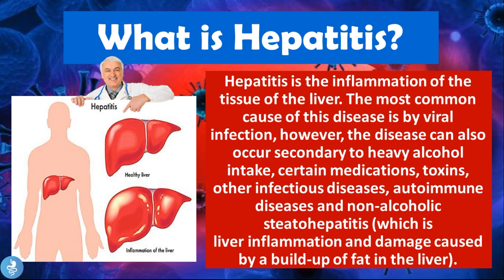So as you can see, the causes of hepatitis are quite broad. Hepatitis actually means the inflammation of the liver or the tissue that makes up the liver. Some of the causes include alcohol, certain viruses, certain medications, and some toxins. We can also have an autoimmune form, in which the body makes autoantibodies that attack normal healthy tissue, as well as non-alcoholic forms involving a buildup of fat in the liver.